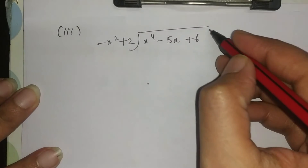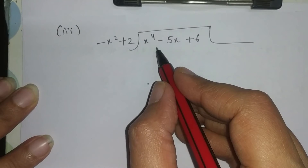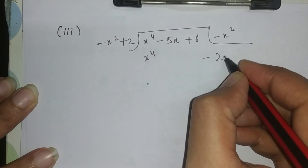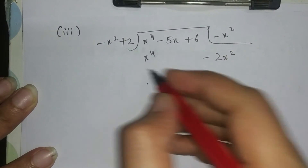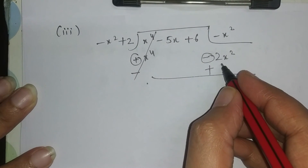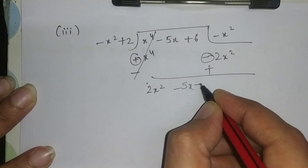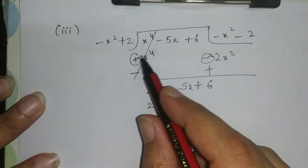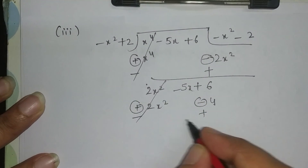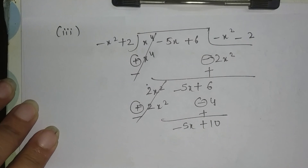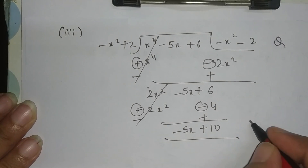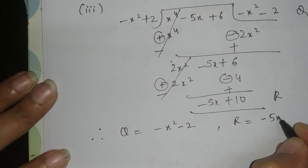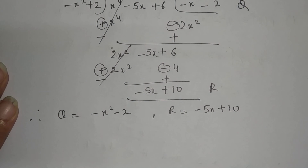Let's do our third part. Minus x raised to power 2 — we will multiply to get x⁴ minus x squared. We do minus minus plus. x⁴ and minus 2x squared gives minus 2x squared. Since it is not a square term here, we have it on the side. Next step: sign change — this will cancel, and we take this power down. Then minus 5x plus 6. Next: minus x squared multiplied by 2 gives minus 2x squared plus 2, and minus 2 will be minus 4. Next: sign change — we cancel, and this will be minus 5x plus 10. So we have our quotient and our remainder. I hope the question is clear to all.